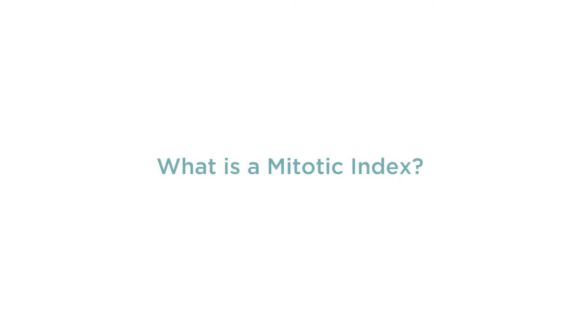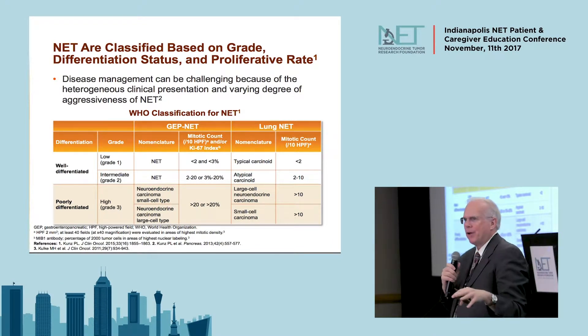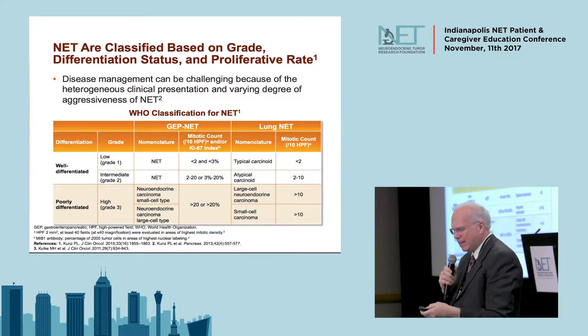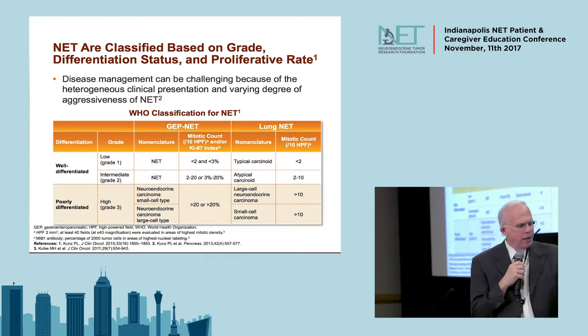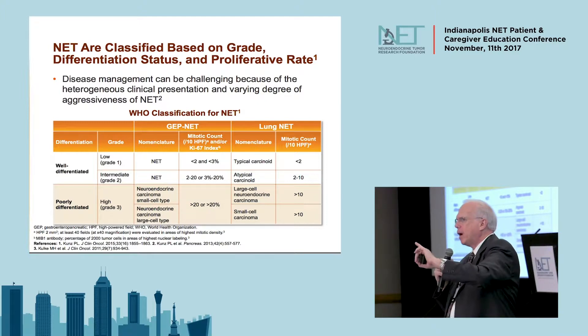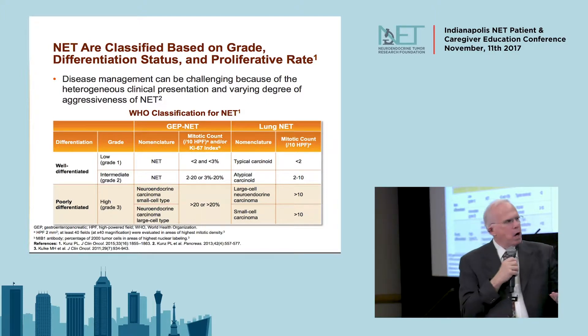That helps us put the grade into three buckets: grade one, grade two, and grade three. The mitotic index is where the pathologist actually counts cells — ideally they print out about 500 cells, look at them visually and do a count. That gives us the biology as it relates to type one, where the mitotic index is less than one mitotic cell per 10 high power fields, essentially saying the tumor is not growing.